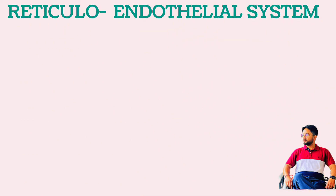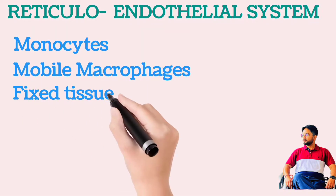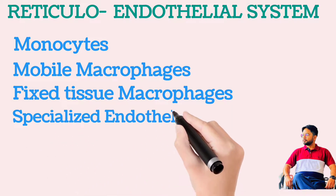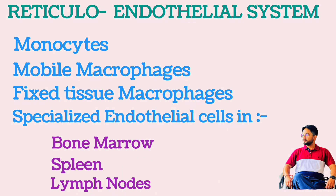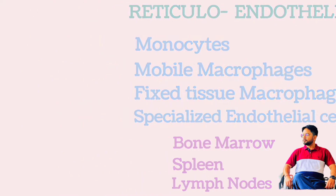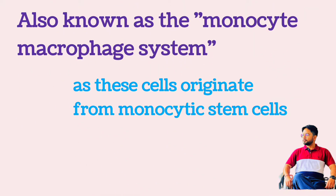The total combination of monocytes, mobile macrophages, fixed tissue macrophages, and a few specialized endothelial cells in bone marrow, spleen, and lymph nodes is called the reticuloendothelial system. However, all or almost all these cells originate from monocytic stem cells, therefore the reticuloendothelial system is almost synonymous with the monocyte-macrophage system.